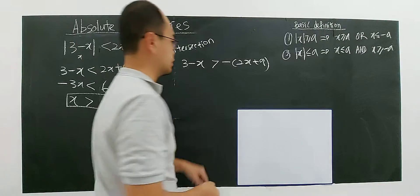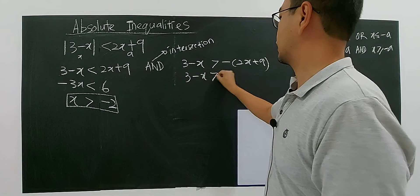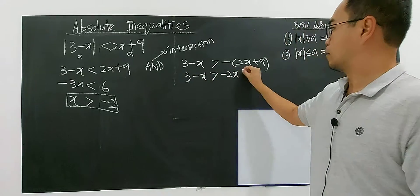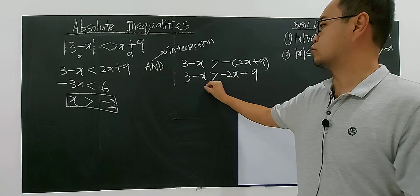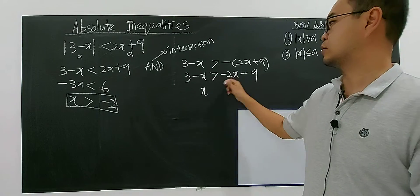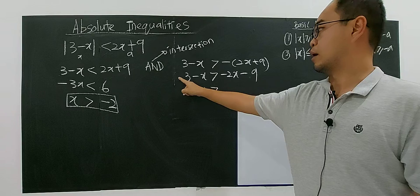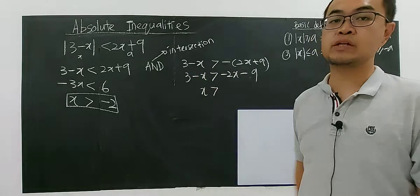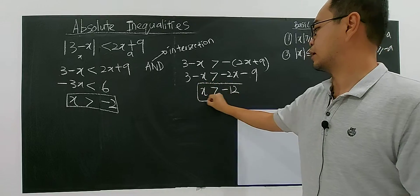So let's look at this case here. You have 3 minus x more than negative 2x minus 9, right? So negative x plus 2x, you have x. Negative x plus 2x, you have x more than negative 9, negative 9 minus with 3. You have negative 12.